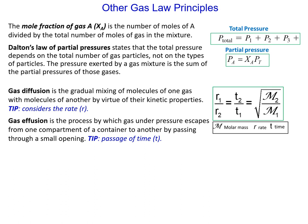Gas diffusion is the gradual mixing of molecules of one gas with molecules of another by virtue of their kinetic properties. In other words, each gas has a specific set of kinetic properties related to it, and that causes it to diffuse at a certain rate.